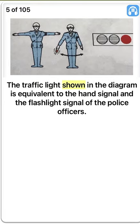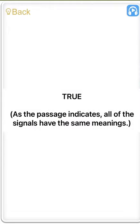The traffic light shown in the diagram is equivalent to the hand signal and the flashlight signal of the police officers. True. As the passage indicates, all of the signals have the same meanings.